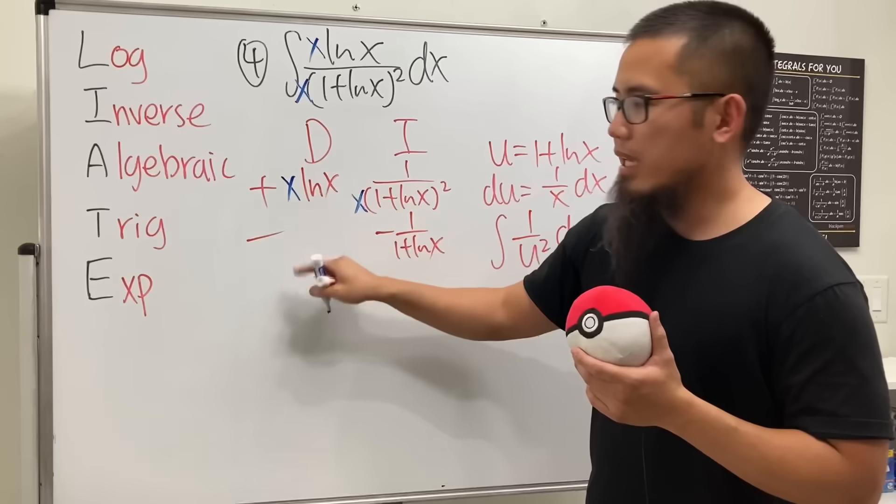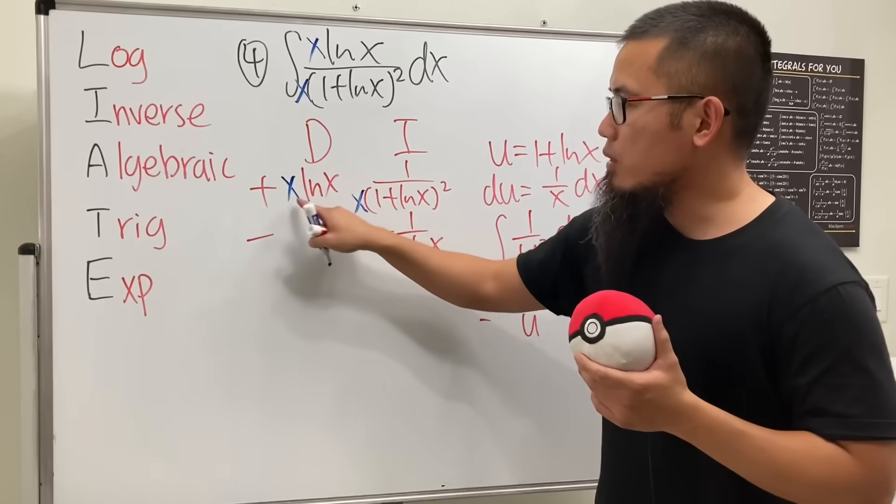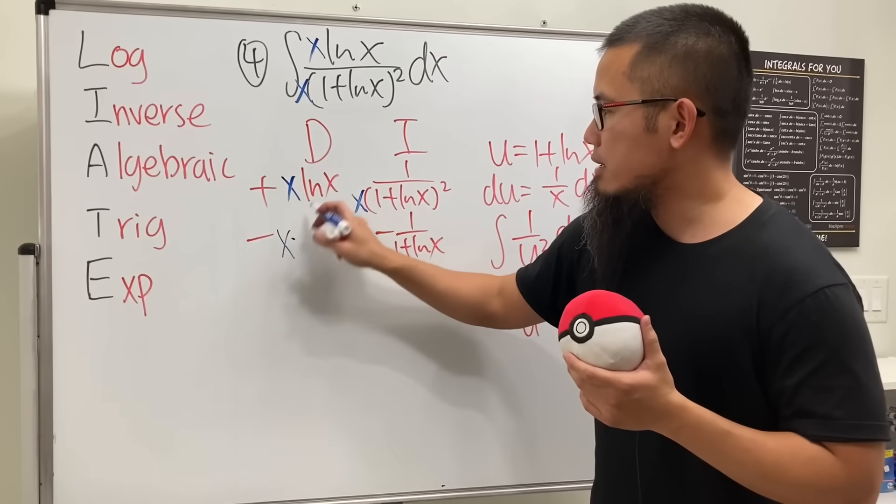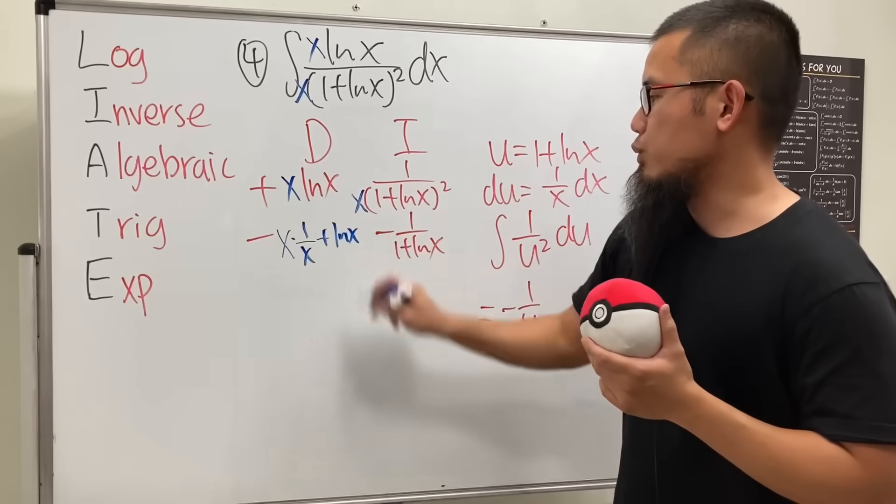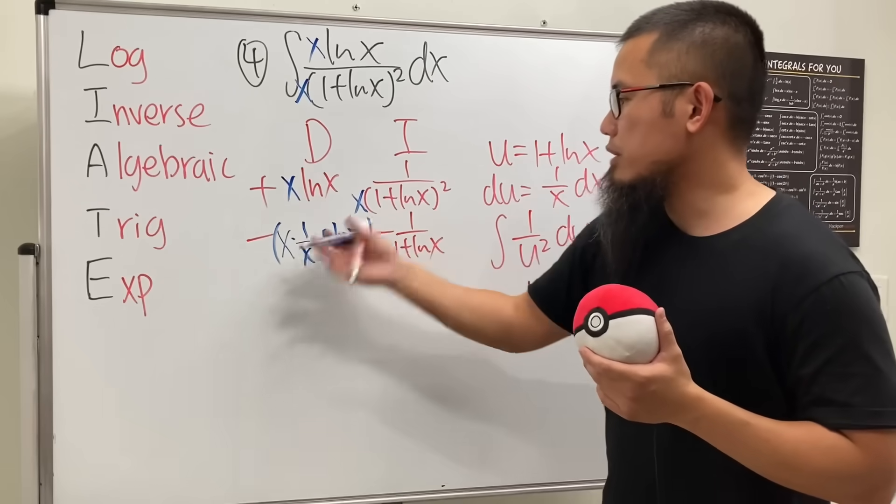So we do x times the derivative of the second plus the second function times the derivative of the first, which is just 1. Just like that, right?